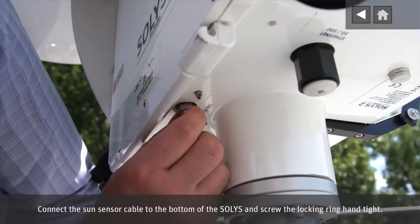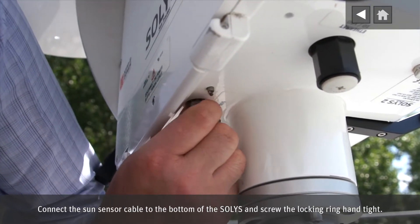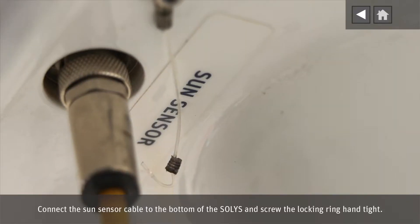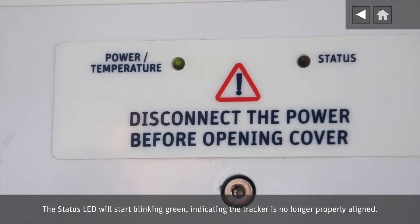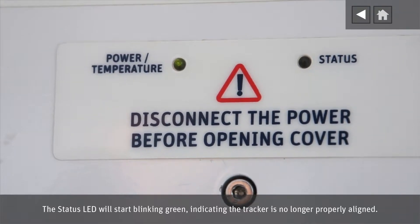Connect the sun sensor cable to the bottom of the SOLYS and screw the locking ring hand tight. The status LED will start blinking green, indicating the tracker is no longer properly aligned.